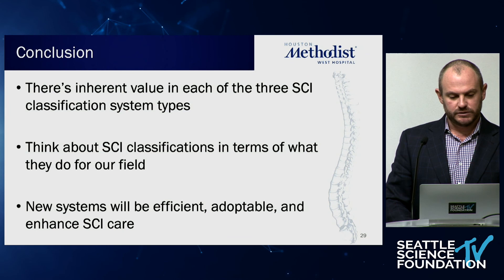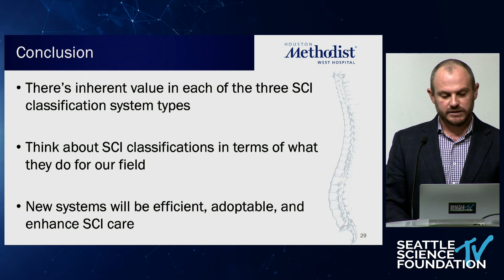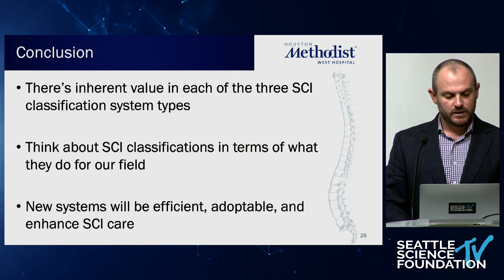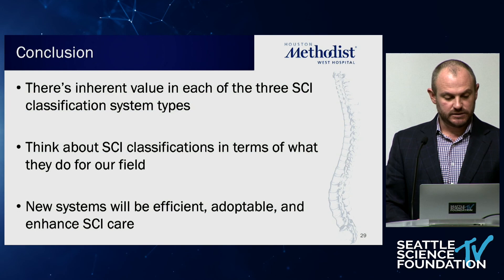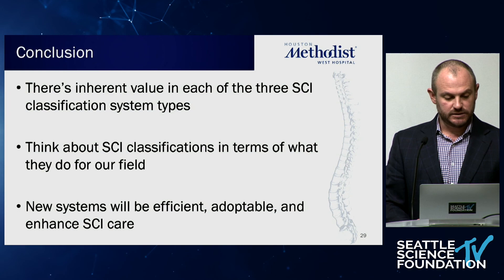In conclusion, there's an inherent value in each of the three types of spinal cord injury classification systems, and we really need to start thinking about them in terms of what they're going to do for our field going forward. New systems are going to have to be efficient, adoptable, and ultimately enhance spinal cord injury care. It was a real honor and privilege to be back here at Swedish and the Seattle Science Foundation, and to be with two of my biggest mentors, Dr. Chapman and Dr. Hurlbert. Thank you very much.